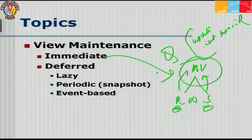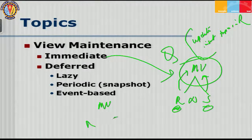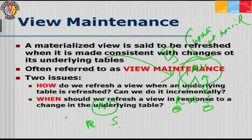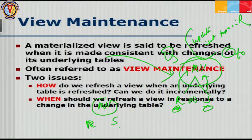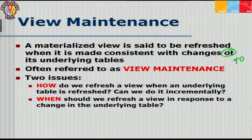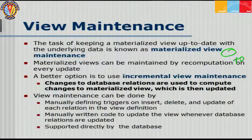The problem statement is: you have a materialized view based on some underlying base tables r and s. If r or s or both change, how do we change the materialized view? A materialized view needs to be refreshed to be made consistent with changes to its underlying tables — this is often referred to as view maintenance. There are two basic issues: how do we refresh, and when do we refresh.